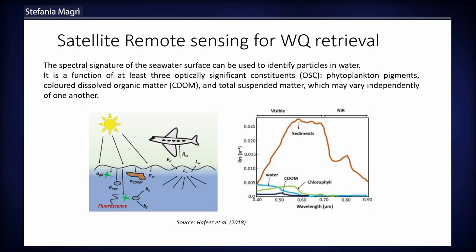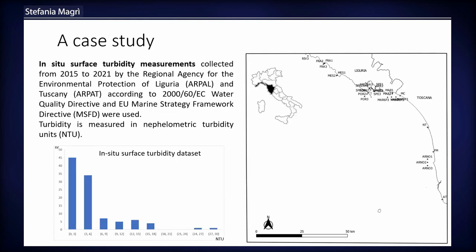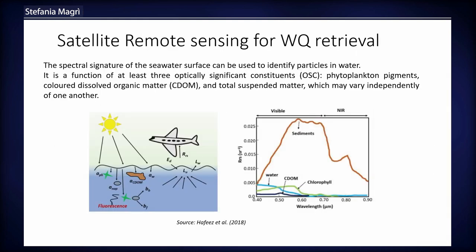We can see in the right image the spectral signatures of different components. Water absorbs energy at most wavelengths, while the presence of chlorophyll causes a small peak of reflectance in the green area. Sediment is the particle that causes the highest values of reflectance, not only in the visible spectrum but also in the near infrared region.